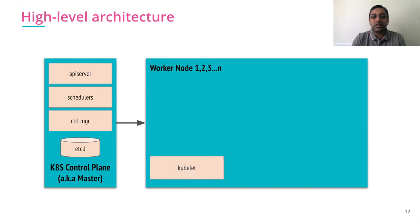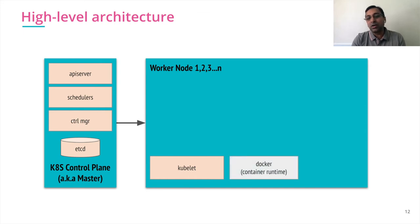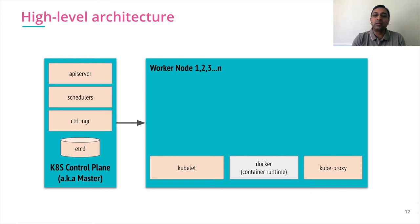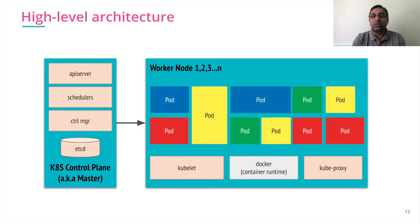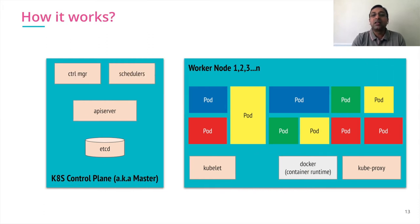All state information is kept in etcd. On the worker node side, the key component is kubelet, whose job is to take requests from the master and fulfill them. It uses Docker as the container runtime to run actual containers. There is another component called kubeproxy, whose job is to manage networking within the worker nodes and provide a communication layer between all applications. The actual workloads or jobs that run are called pods.